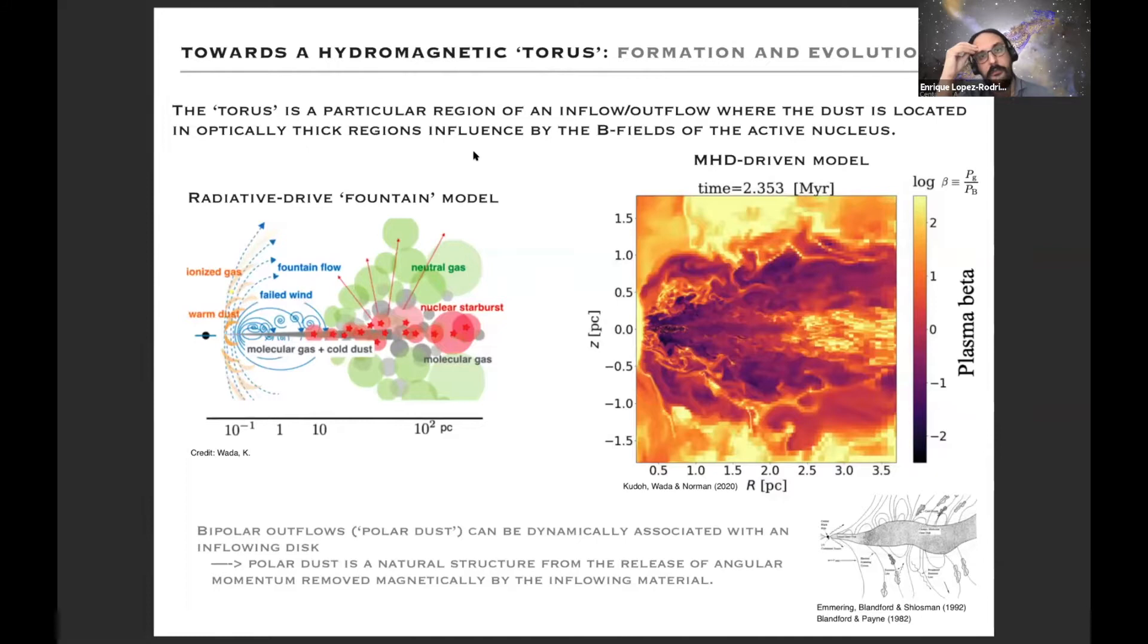If we learn from the hydrodynamical model made by Emory, Blandford, and Schlossman back in the 80s and 90s, these bipolar outflows, or polar dust, can be dynamically associated with an inflow disk where the polar dust is basically a natural structure from the loss of angular momentum removed magnetically by the inflowing material.